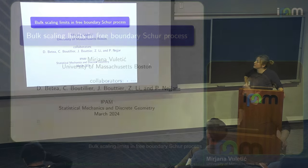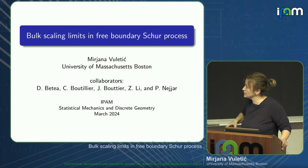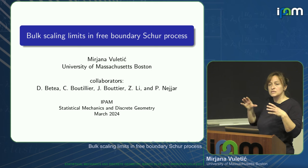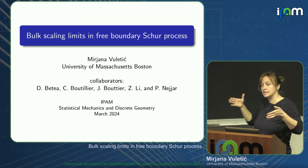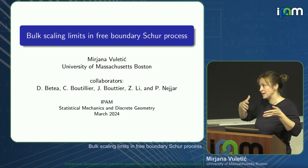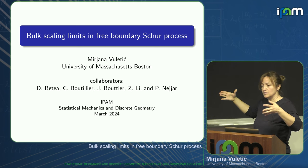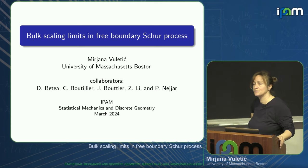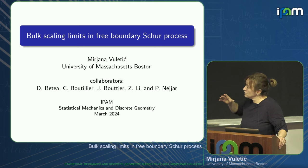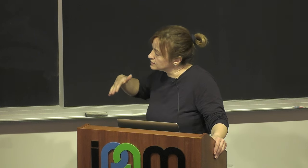My goal is to get to the free boundary Schur process, which is a generalization of the original Schur process — a measure on sequences of partitions. In the original, it was required to start from empty, then build partitions by adding or removing certain strips, and at the end you end up with an empty partition. For the free boundary version, we don't have that requirement, so the boundaries can be any partitions.